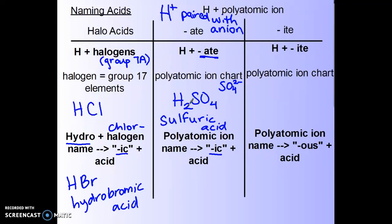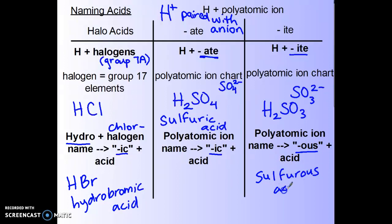And finally, if it's an ite polyatomic ion like sulfite, this has a two negative charge as well. So this acid is H2SO3. The name of this one is going to take the sulfite, change it to sulfurous. So you take the sulfite and just change the ending to ous. Sulfurous acid. So that is naming acids.